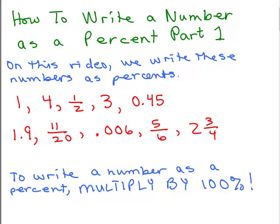This is part 1 of how to write a number as a percent. On this video we're going to write these numbers as a percent. There's 10 numbers here and to do that, all we do is multiply each number by 100 percent.